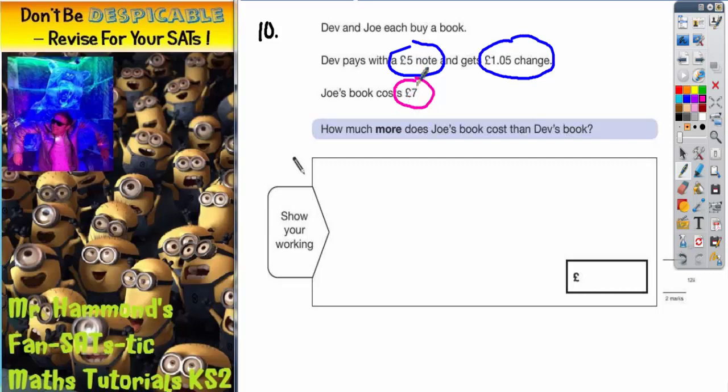I'm using different colors because we're dealing with two different people, just to make it clear so we don't get confused with the numbers. We've got to work out how much more Joe's book costs than Dev's book. We've got a nice big space for working out here.